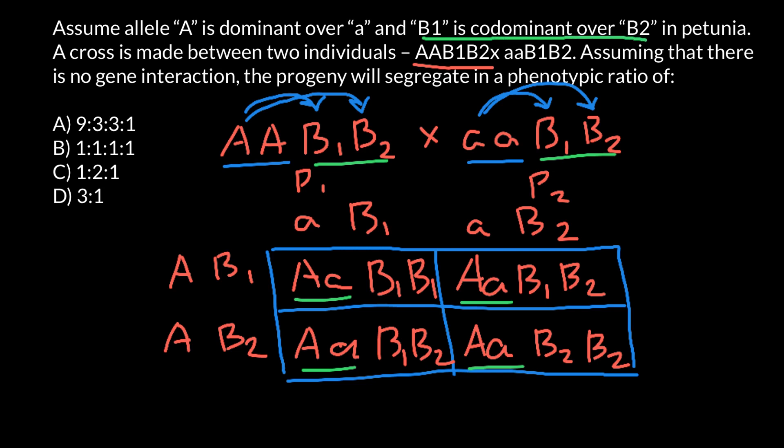Again, what codominant means. For example, if we have, say, B1 allele would cause flowers to be red, then genotype B1, B1 would make flowers that are going to be completely red. If allele B2 and genotype B2, B2 would cause that flowers going to be, say, yellow, then this genotype would produce completely yellow flowers.